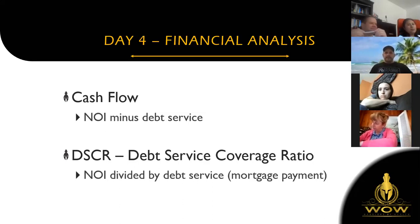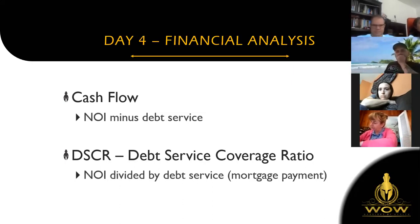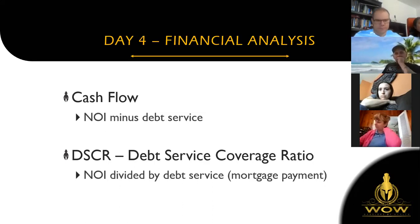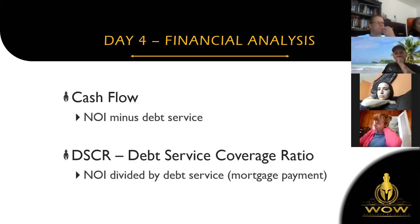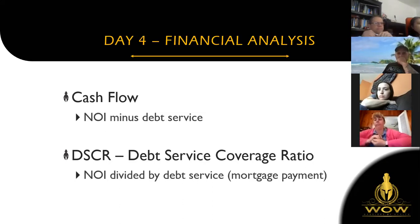What that means: let's say your mortgage payment is $10,000. To have a 1.25 coverage ratio means you need net income of $12,500. That means not only can you cover the full $10,000, but you have an extra $2,500 as a buffer. This is usually done on an annual basis. So that's debt service coverage ratio.